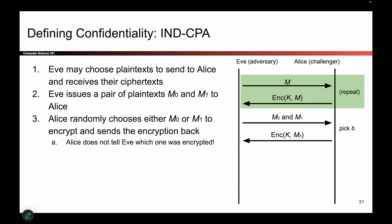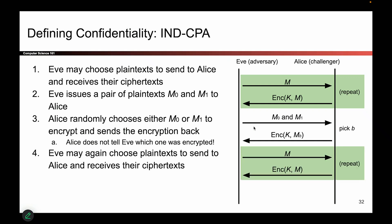Now Alice turns around — Eve can't see what she's doing — and Alice flips a coin. If it comes up heads, she encrypts m0, which was dog. If it comes up tails, she encrypts m1, which was cat. Eve doesn't know which one Alice chose. Alice chooses one of m0 or m1 at random using a coin flip, encrypts that message, and sends it back to Eve. So at this point, Eve has received something — it's either the encryption of dog or the encryption of cat — and Eve doesn't know which one was encrypted. That is Eve's challenge: to figure out which one was encrypted.